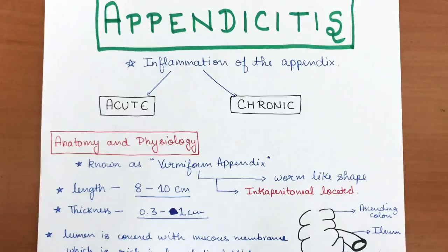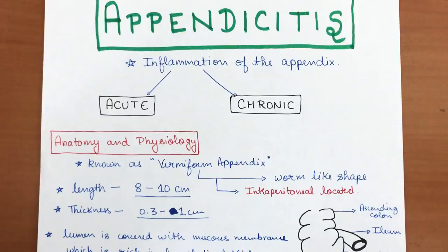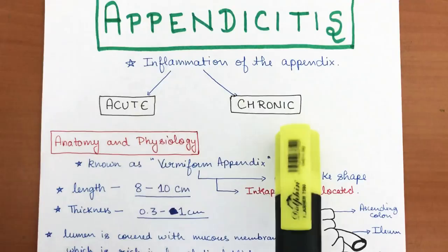Hello everyone. In this video I'm going to tell you about appendicitis. I'll start from the appendix — its anatomy and physiology — and then go to acute appendicitis, its etiology, pathogenesis, clinical forms, and everything you need to know. Appendicitis is basically the inflammation of the appendix, and it can be acute or chronic.